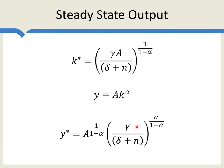The Solow model says any differences in output per worker must be due to differences in these fundamental factors. Suppose we want to compare two different countries and ask: how much of the observed differences in output per worker can be explained by reasonably sized differences in fundamentals? We'll focus on the savings rate, though similar exercises could be done for the others.